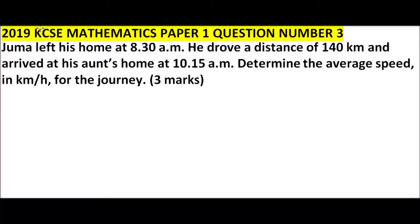So question number three, 2019 paper one. We are told Juma left his home at 8:30 a.m. He drove a distance of 140 kilometers and arrived at his aunt's home at 10:15 a.m. Determine the average speed in kilometers per hour for the journey. Three marks.